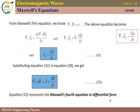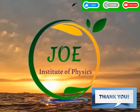This is Maxwell's fourth equation in differential form: ∇×H = J + ∂D/∂t. This completes the derivation of Maxwell's third and fourth equations.